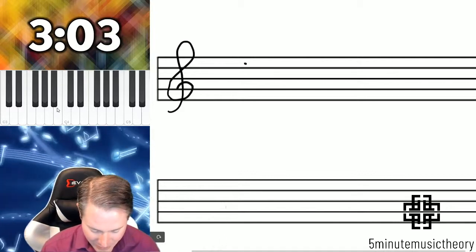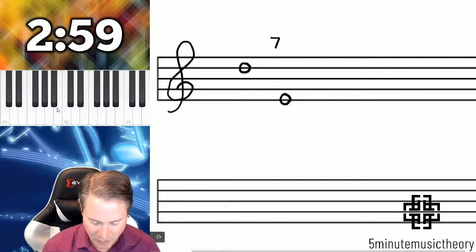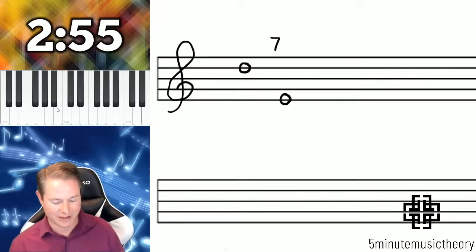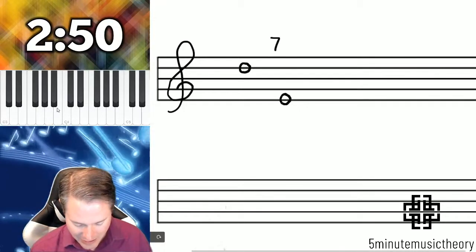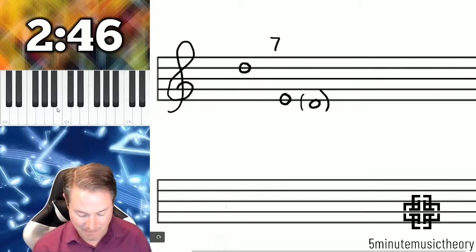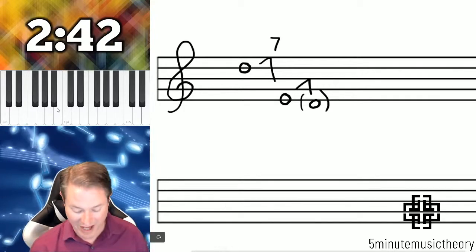Let's do a descending interval this time. How about from a D down to an E which is a seventh. That number never changes once you figure it out. If I imagine an octave below that upper note which is another D, this smaller interval plus this bigger interval should equal that octave.